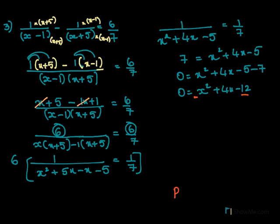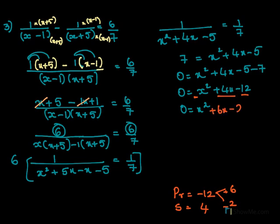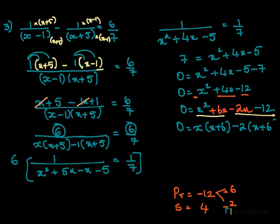Now for this, the product should be minus 12 and the sum should be 4. The factors are plus 6 and minus 2: 6 plus (minus 2) equals 4 and 6 times (minus 2) equals minus 12. So we write x square plus 6x minus 2x minus 12. Taking x common from the first two gives x(x plus 6), and taking minus 2 common from the last two gives minus 2(x plus 6).